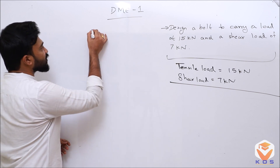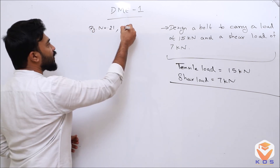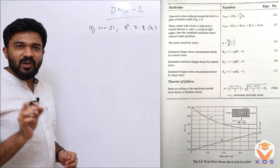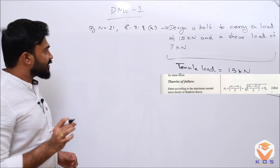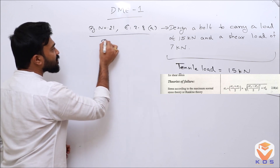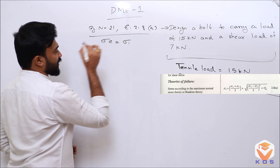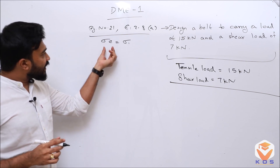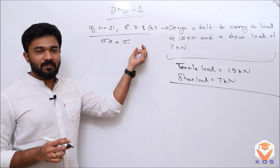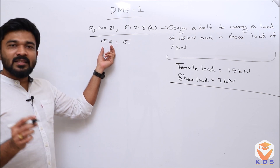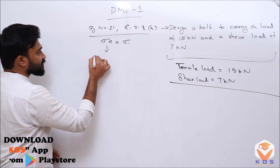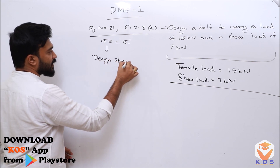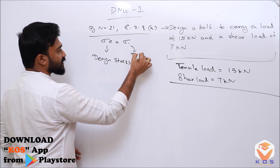In the data book, page number 21, equation number 2.8a, the first theory of failure. We call it Rankine Theory. It is given by: sigma_e is equal to sigma_1. If you observe this formula, there are two parameters: sigma_e and sigma_1. Sigma_e is called the design stress, and sigma_1 is the major principal stress.